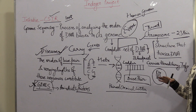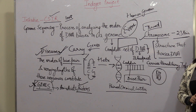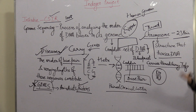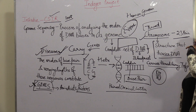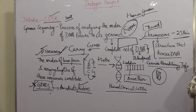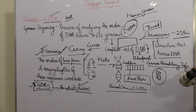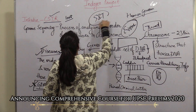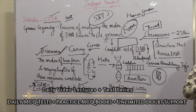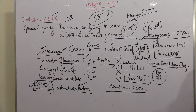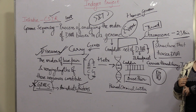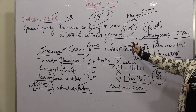So that was your basic Indigen project question, covering the Human Genome Project, the Indigen project, and CSIR — the Council of Scientific and Industrial Research. CSIR is one of the largest and most important research and development organizations in India. It functions under the Ministry of Science and Technology but is registered as an autonomous body under the Societies Registration Act of 1860.